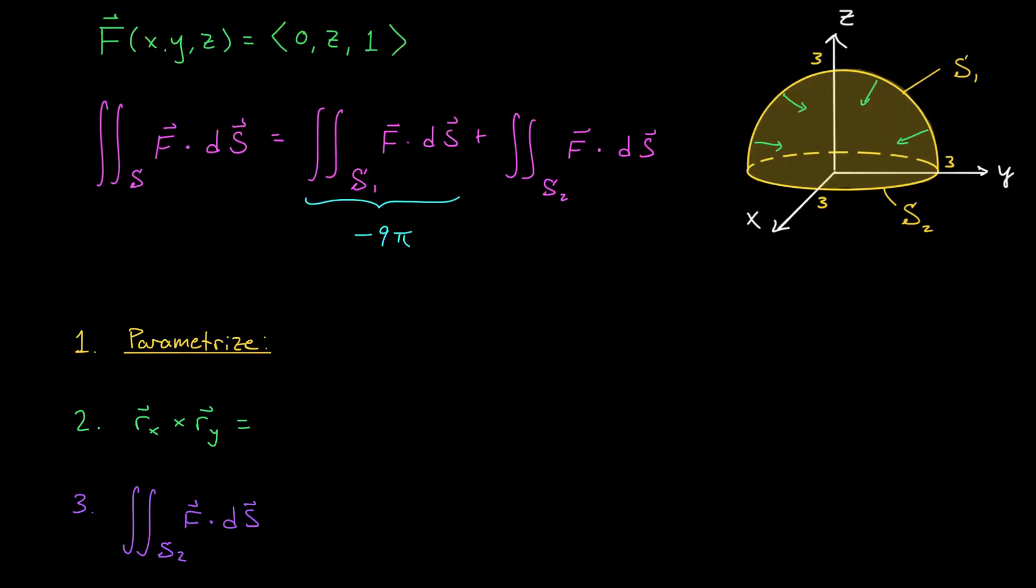We've just computed the surface integral of F over S₁, and now we have to do the same for S₂. Now, you're probably thinking, oh, come on, Zach, I don't want to do this again. The computation was so long. Yeah, but integrating over S₂ is a lot simpler. Let's try following the three steps from before. S₂ is given by the equation z = 0, right? That's the graph of a function. So we can parametrize this using R(x, y) = ⟨x, y, f(x, y)⟩, but in this case, that's simply 0.